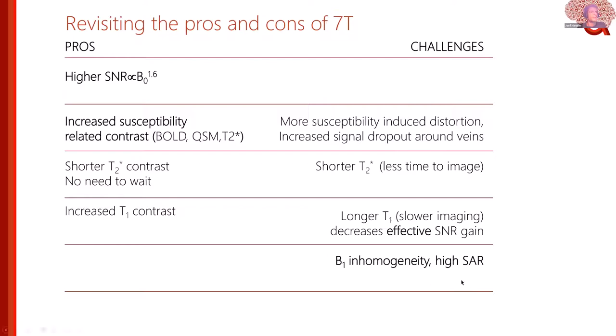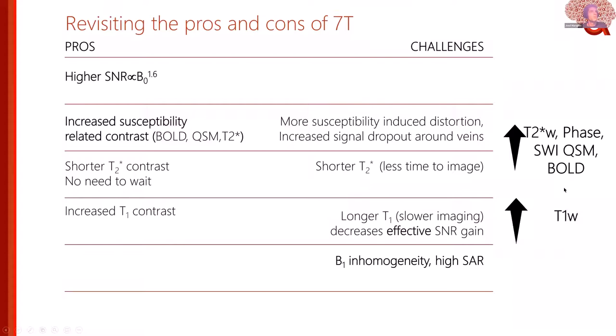T2-star weighted phase imaging, susceptibility-weighted imaging, or the combination — these are all modalities that benefit greatly from high field. T1-weighted imaging is also a big winner. T2-weighted and diffusion-weighted imaging are less clear winners in this scenario.